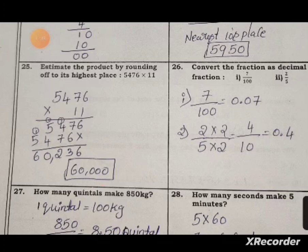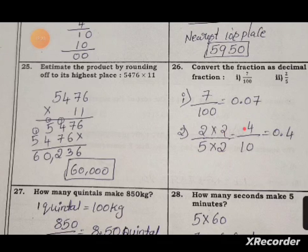Question twenty-five: convert the fractions to decimals. First, 7 by 100 — the decimal point: ones, tens, hundreds — so it is 0.07. Second, 2 by 5: convert denominator to 10 or 100. Since 5 times 2 equals 10, multiply both numerator and denominator by 2: 2 by 5 becomes 4 by 10, which equals 0.4.